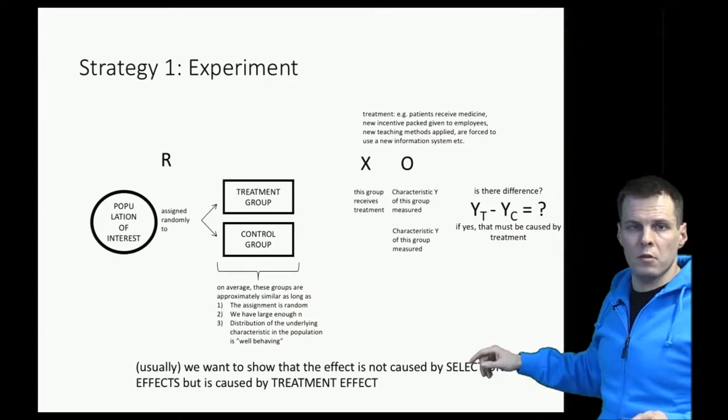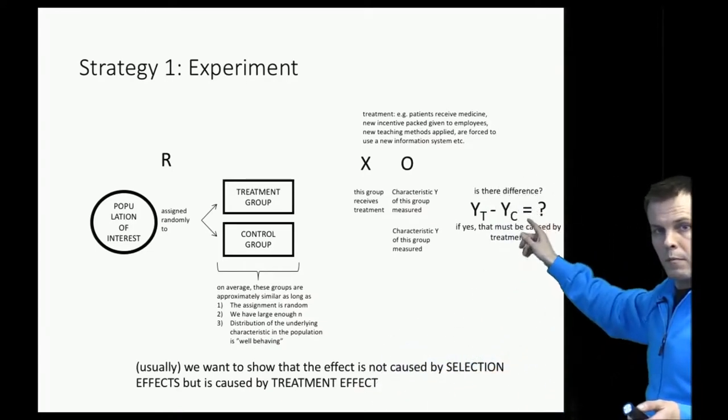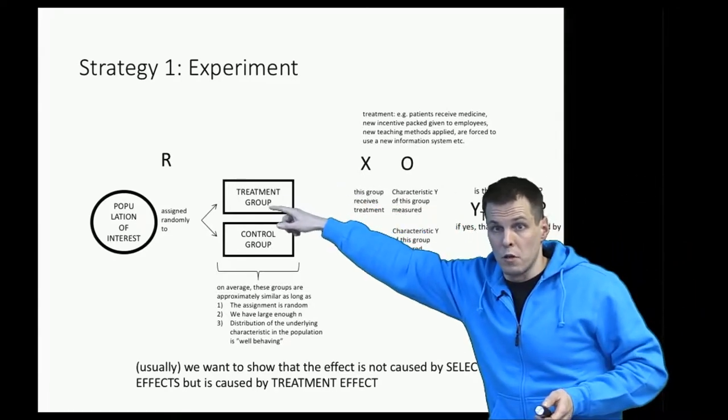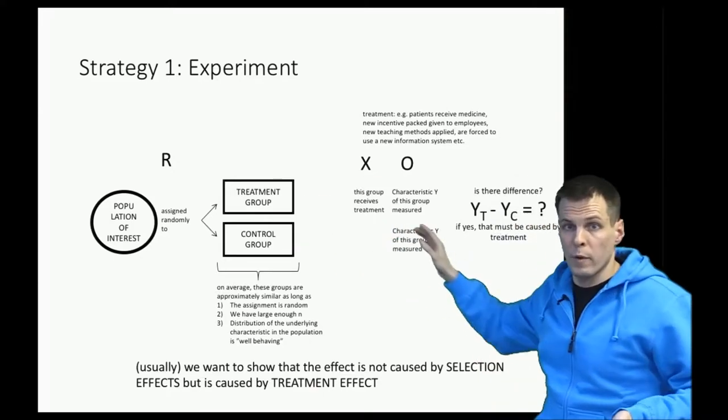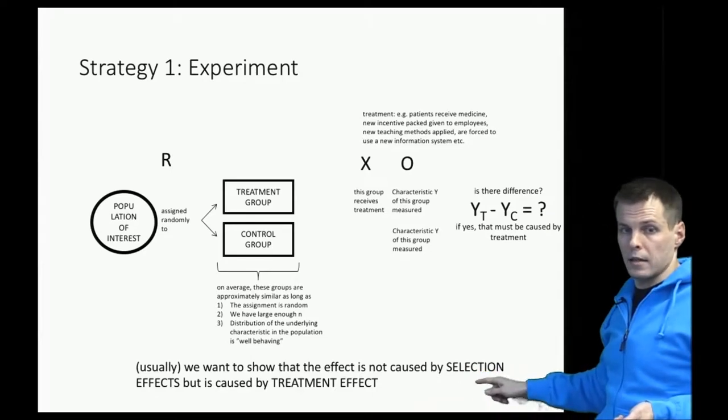The randomization is important because we want to show that this difference is because of the treatment and not because we chose to assign the groups in a certain way. So we want to show that there's a treatment effect instead of a selection effect.